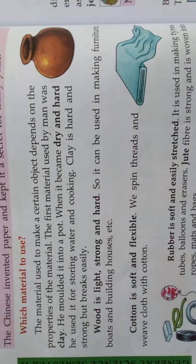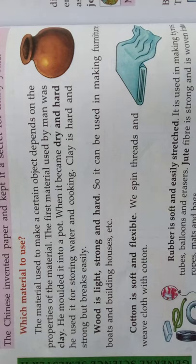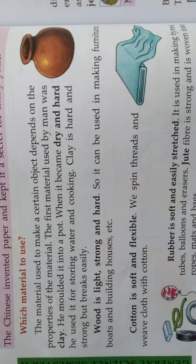Wood is light, strong and hard. So it can be used in making furniture, boards and building houses. We can use wood to make furniture like a table, chair, and cot. And we can use it for making boards. Since it is light in weight, we can use wood for building houses, making doors and windows.